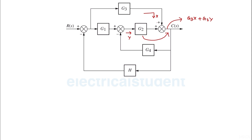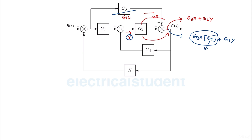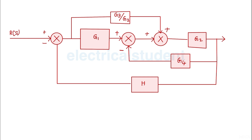If you want to take this block to the right side of the summing point, then at the same point you will get the signal like g3 times x times g2 plus g2 times y, because this g2 will be shifted so y will again be multiplied with g2. This additional term changes the original signal by g2, that's why you divide g3 by g2 when moving this block to the right side of the summing point.